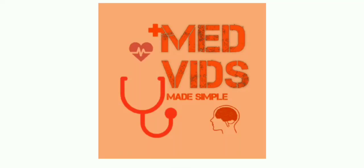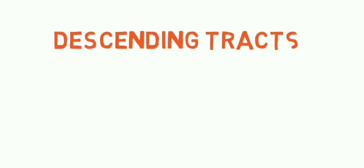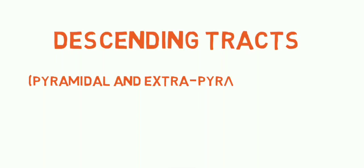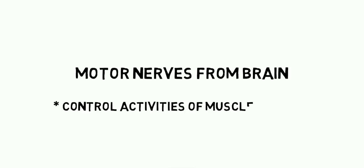Hey guys, welcome back to Med Made Simple. In this video we're going to see about descending tracts, which is a very important topic in neuroanatomy as well as in physiology. The descending tracts basically carry motor nerves from the brain, most commonly from the cerebral cortex. They control the activities of skeletal muscles, while smooth muscles and cardiac muscles are controlled by the autonomic nervous system.